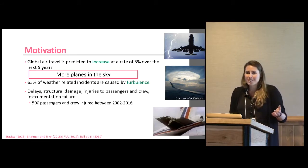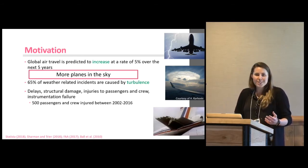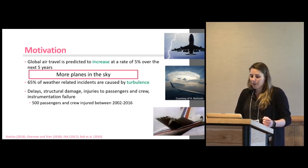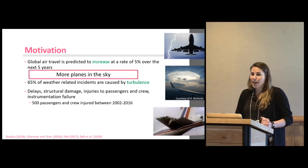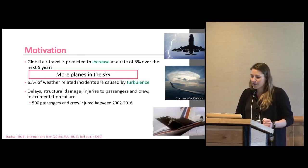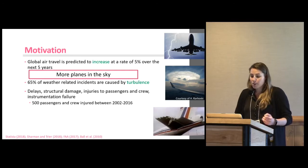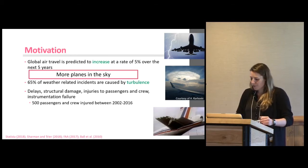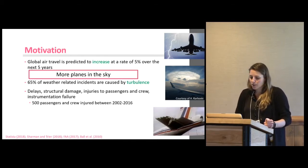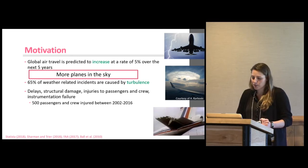More planes in the sky means they have more opportunity to get too close to weather that could influence their flight. Based on some past studies, 65% of weather-related incidents or accidents are actually caused by turbulence. Other incidents could be caused by lightning or hail, but turbulence is 65% — a pretty large percentage. Turbulence causes delays, structural damage, injuries to passengers and crew, instrumentation failure, and in the end, more money lost in the aviation industry.